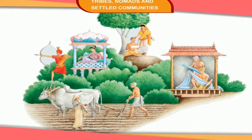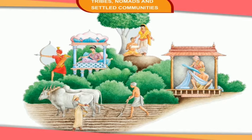Human settlements in the Indian subcontinent have started growing in river basins and other fertile areas. The people in these areas settled down due to the continued availability of fertile land, water, and moderate climate. People continue to live in their traditional way. In this chapter, we shall see the social changes which took place during the medieval period in both types of settlements.